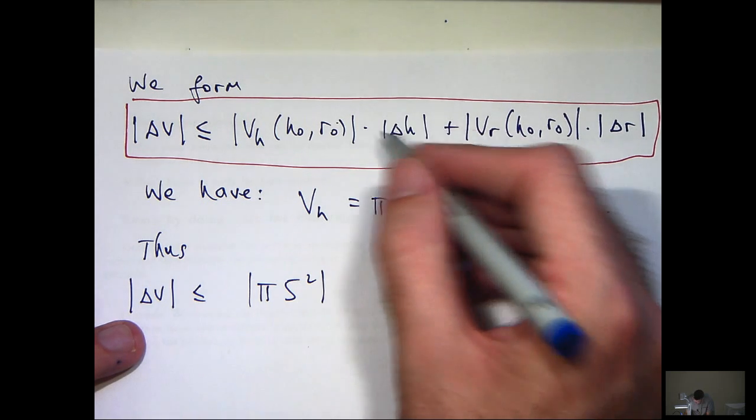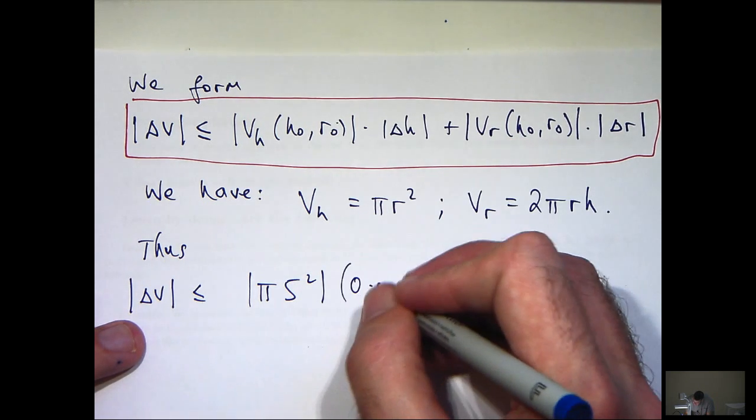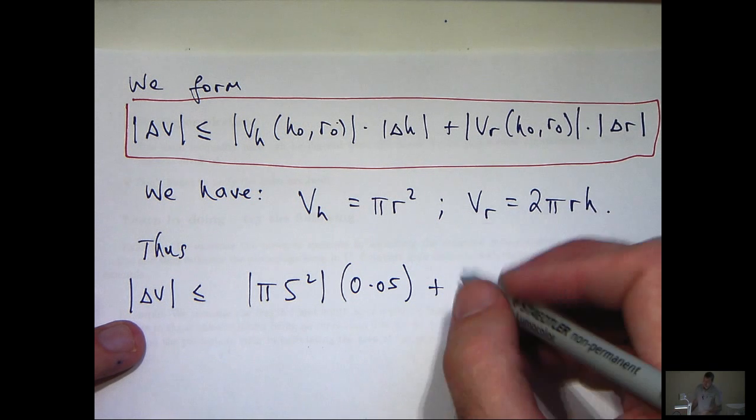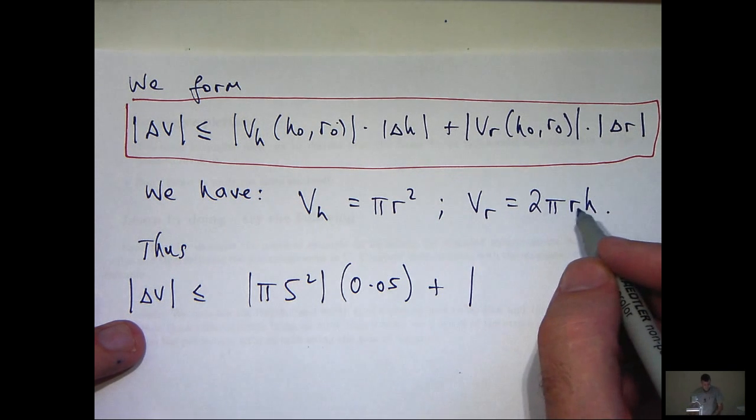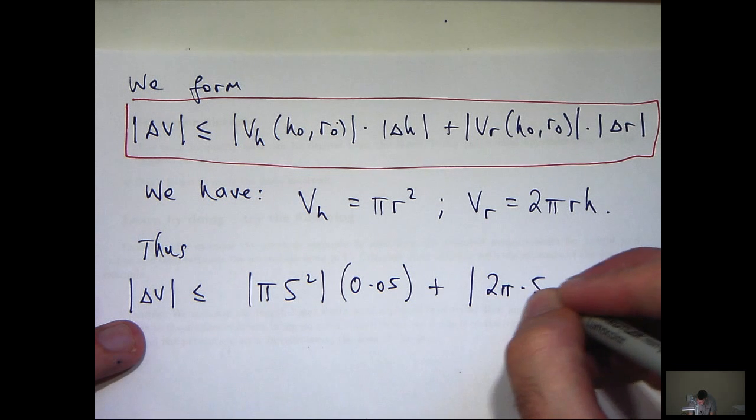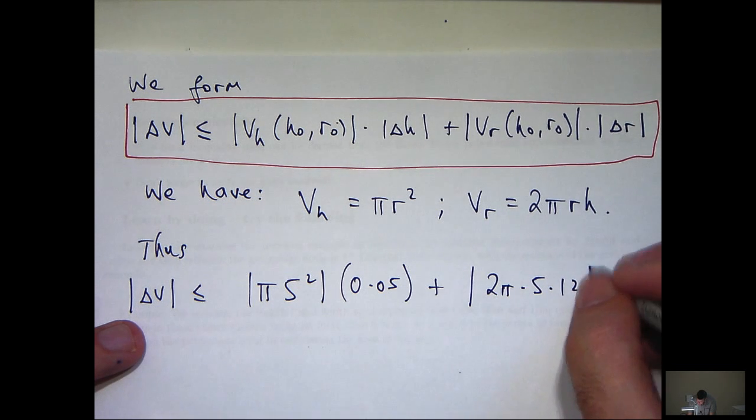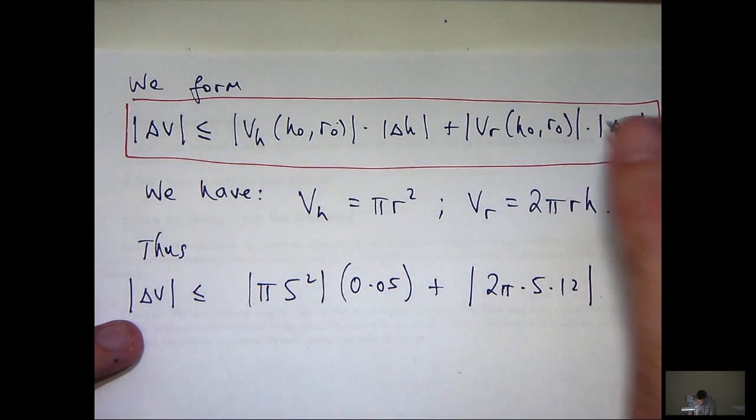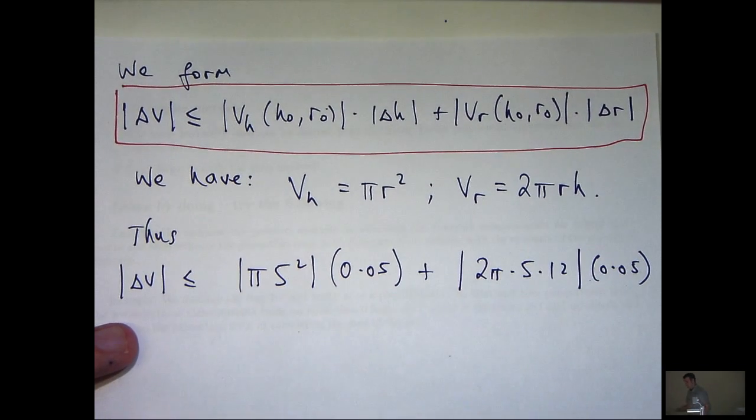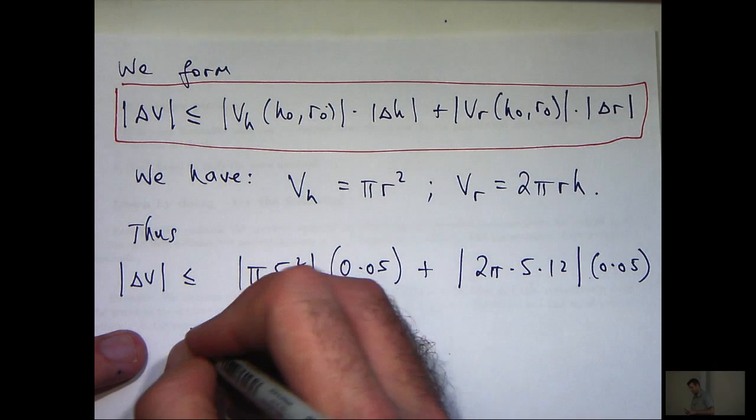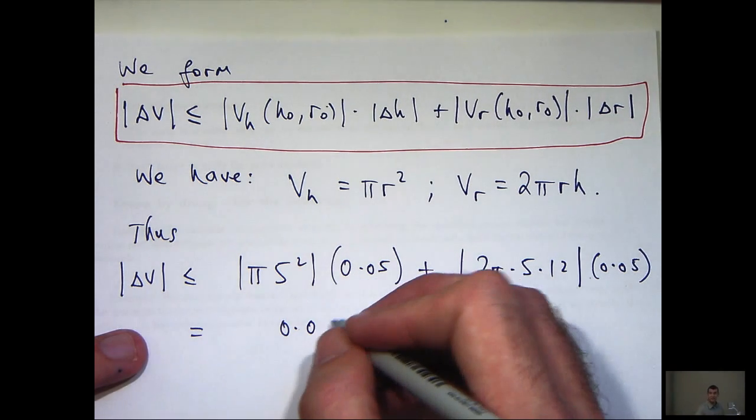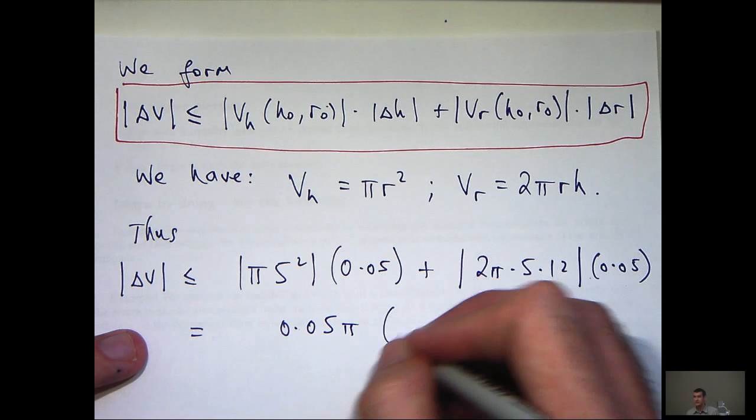Let's just substitute in there for r equals 5. We'll get basically pi 5 squared. Now this is less than or equal to 0.05. Over here, this is going to be 2 pi times 5 times 12. And again, this is less than 0.05. So all you need to do now is clean up a bit. If we calculate these, we'll get something like the following.